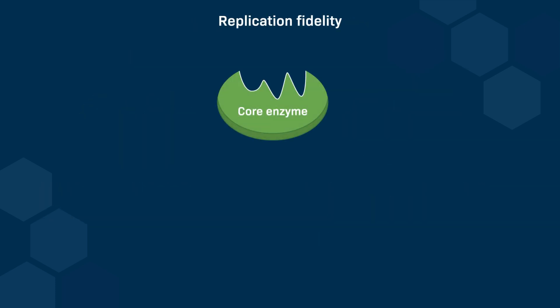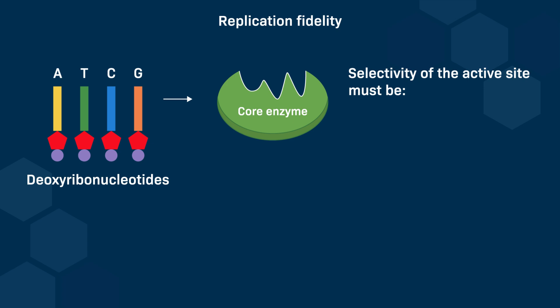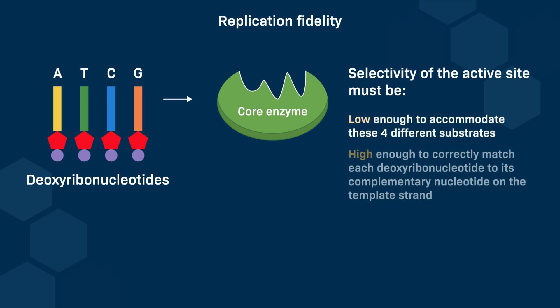The catalytic site of most enzymes typically accepts only a single substrate, but the catalytic site of DNA polymerase must accommodate four different deoxyribonucleotides: DATP, DGTP, DCTP, and DTTP. The selectivity of the active site must be low enough to accommodate these four different substrates, but high enough to correctly match each deoxyribonucleotide to its complementary nucleotide on the template strand.